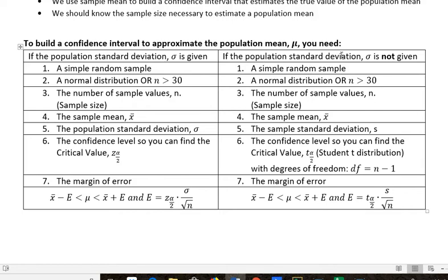If you do not know it, we still need a simple random sample. We'd like to know it's normally distributed or that it has an n greater than 30. We need to know the sample size. We need to know the sample mean x bar. In this case we're going to use the sample standard deviation s and the confidence level so that you can calculate the critical value. But the critical value here is going to be from the student t distribution rather than the normal z distribution. And we need to know the degrees of freedom.